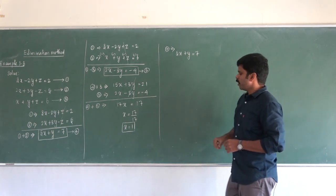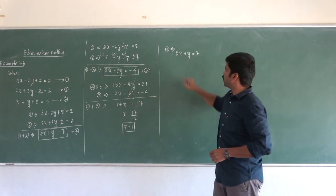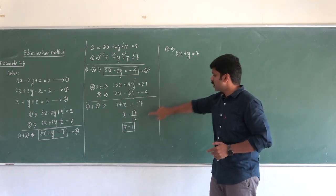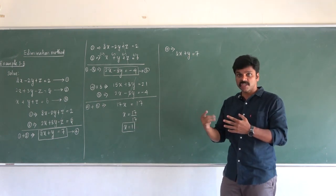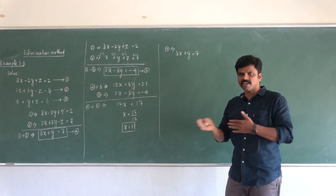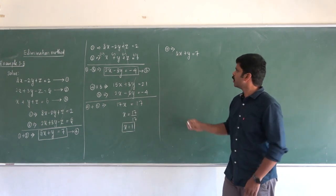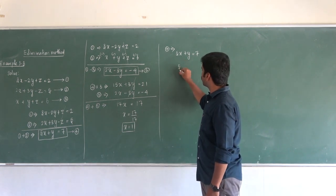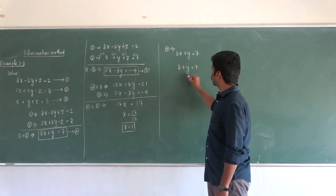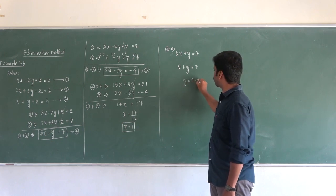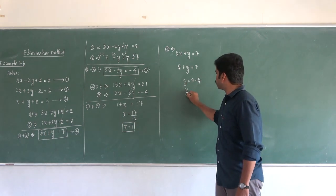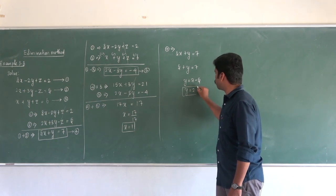I will substitute x equal to 1 into the equation with two variables. Since it is two variables, substituting x equal to 1 makes it one unknown. So 5 into 1 is 5, and y equal to 7, then y is equal to 7 minus 5, then y is equal to 2. So the value of y is 2.